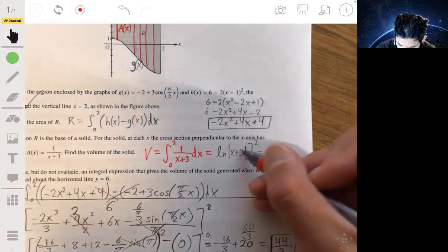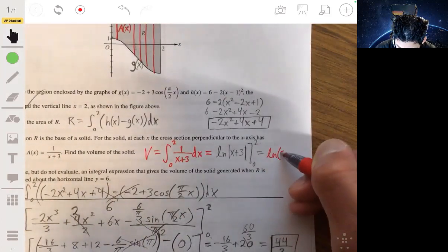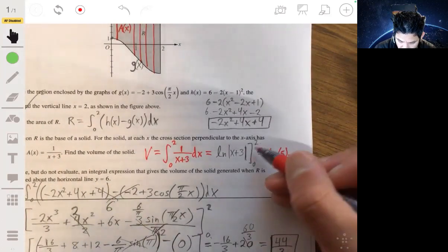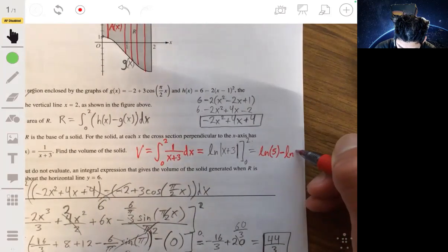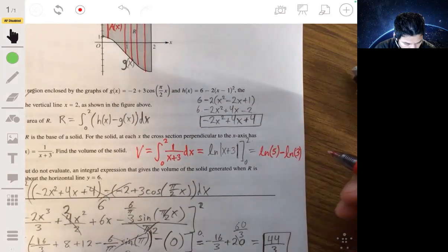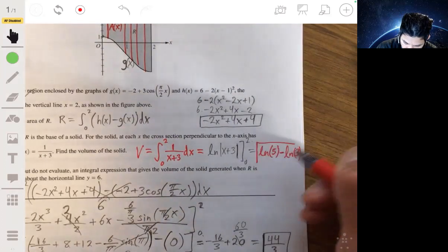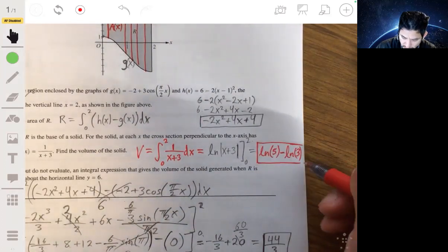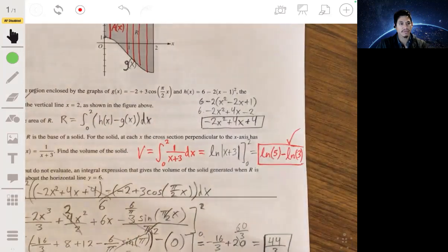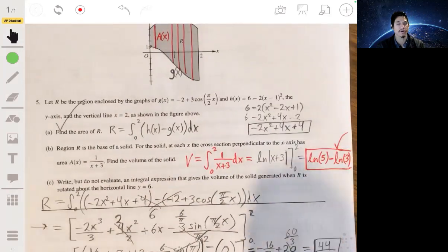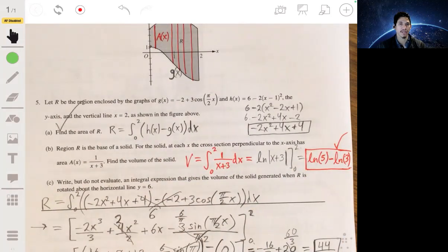So then this will plug in 2, natural log of 5 minus natural log of 3, and that's it, that's your answer, because you can't use the calculator, so that's your calculation. Simple. I guess they're really testing that you know that general setup.